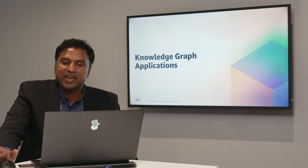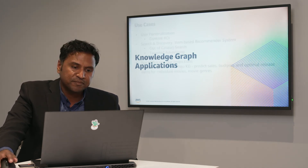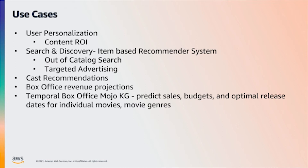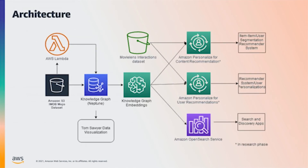Now that we have a better understanding of how media knowledge graphs are built, let's look at some applications. Knowledge graphs have many exciting applications. First, the semantic similarity of content in the graph can be used to personalize recommendations to users. It can be used to make cast recommendations based on historical performance of cast members in similar titles, and to make projections on box office revenue. Leveraging temporal box office revenue data in the graph, even optimal release dates could be predicted based on past performance of semantically similar titles.